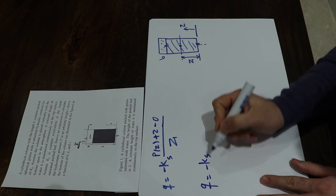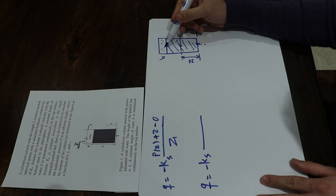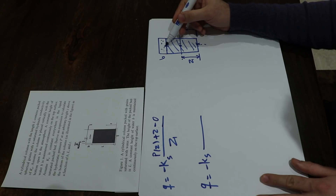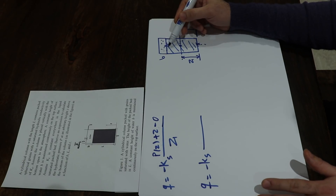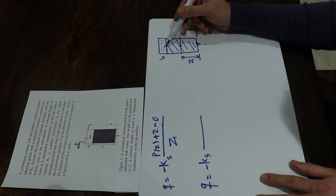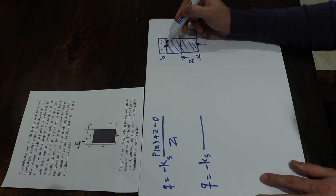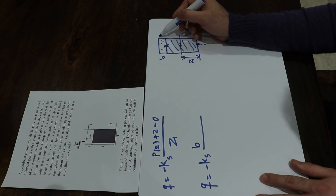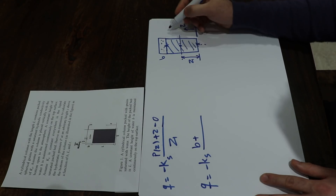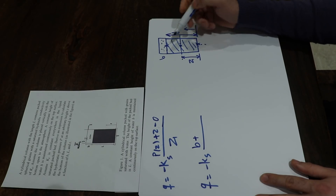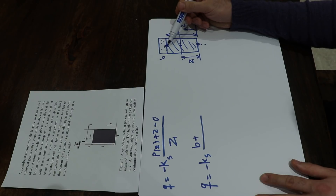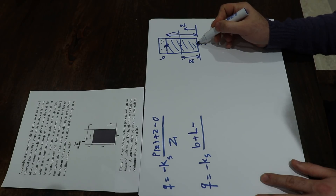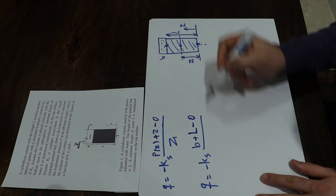So you can write Q equals minus Ks times the hydraulic head at the inlet minus the hydraulic head at the outlet. The hydraulic head at the inlet equals pressure potential plus gravitational potential. The pressure potential equals B — the hydrostatic pressure — and the gravitational potential equals L, the vertical distance from the reference level to the inlet, giving B plus L. The hydraulic head at the outlet equals zero, so this becomes B plus L divided by L.